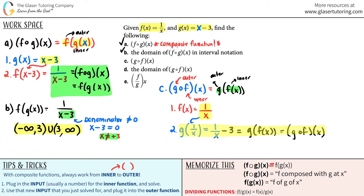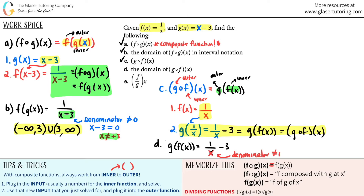Now part d: find the domain of g of f of x, which equals 1 over x minus 3. Again, we need to think about exclusion values. We have an x in the denominator, and the denominator cannot equal zero. This one is straightforward — it's literally just x. So x cannot equal zero. Are there any other exclusions? No.